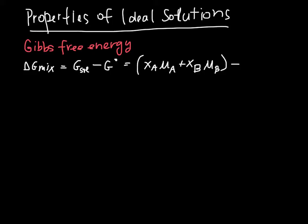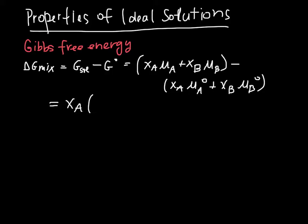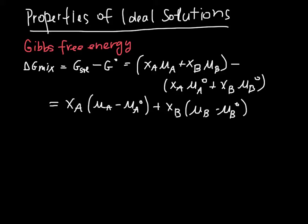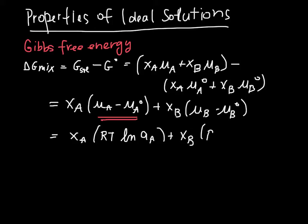We subtract from that the weighted sum of the partial molar Gibbs free energies, or chemical potentials, of the pure stuff. Rearranging, we have XA times (μA minus μA for the pure stuff), plus XB times a similar difference. Remembering how we defined activity, we can express this in terms of activity, and we end up with XA times RT ln(aA) plus XB times RT ln(aB).